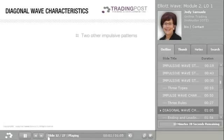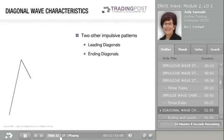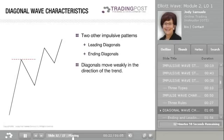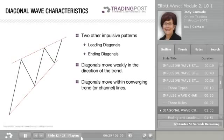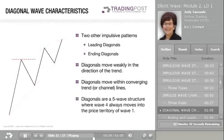There are two other impulsive Elliott wave patterns which move with the larger trend: leading diagonals and ending diagonals. The diagonal wave structure is different from the impulse wave structure. While impulse patterns strongly move in the direction of the trend, diagonals move more weakly in the direction of the trend. Diagonals move within converging trend or channel lines. In impulse structures, one of the rules is that Wave 4 can never move into the price territory of Wave 1. Diagonals, in contrast, are a 5-wave structure where Wave 4 always moves into the price territory of Wave 1. These diagonals are most common in highly leveraged markets, such as Forex and commodities.